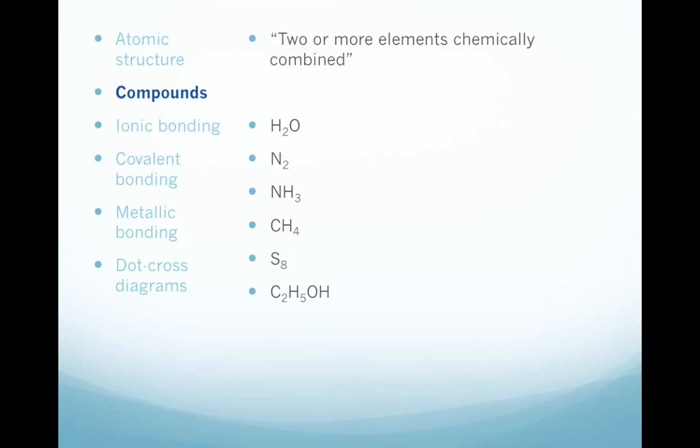NH3, that's a substance known as ammonia. You can see two different elements in there, nitrogen and hydrogen, so that's a compound. CH4, I hope you recognize that one as methane from the topic on oil. Methane is a compound because it's got two elements in there, carbon and hydrogen. Sulfur, S8, no, that's an element. More than one atom joined together, but only one sort. And then finally, that one at the bottom, C2H5OH, that is ethanol. So, a compound, two or more elements chemically combined.